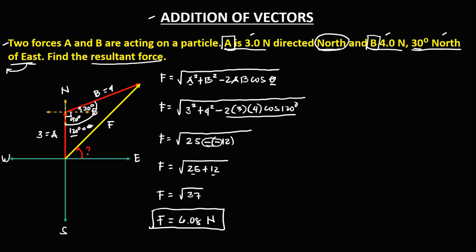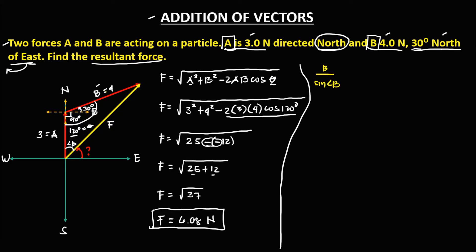To find the direction angle, we need to find angle B. Since this side is side B, this is angle B. Using the sine law: B / sin(angle B) = F / sin(120°). Substituting: 4 / sin(angle B) = 6.08 / sin 120°. Cross-multiplying: 6.08 × sin(angle B) = 4 × sin 120°.